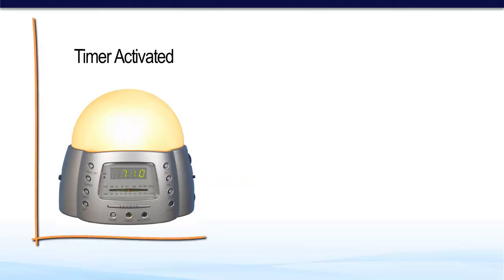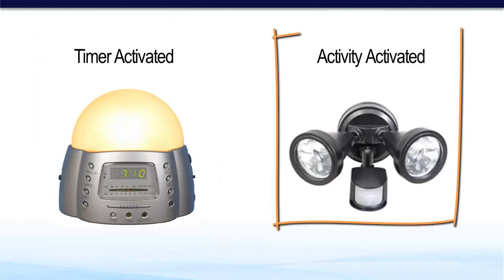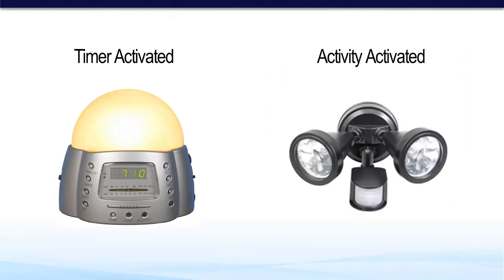There are two types of triggers: timer activated and activity activated. So if we take for example these two lights, one is activated using a timer and the other is activated using a sensor. The timer could be set at a particular time and day, or repeating, such as every weekday at 9am. The sensor is activated by external activity, such as motion or perhaps light levels — so if the light is getting brighter or getting darker.